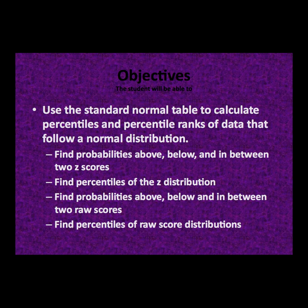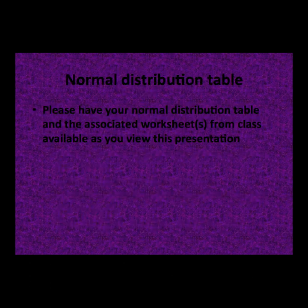Specifically, students will be able to find probabilities above, below, and in between two z-scores; find percentiles associated with the z-distribution; find probabilities above, below, and in between two raw scores; and find percentiles of raw score distributions. Please have access to your normal distribution table from your textbook as well as the associated worksheets from class as you view this presentation.